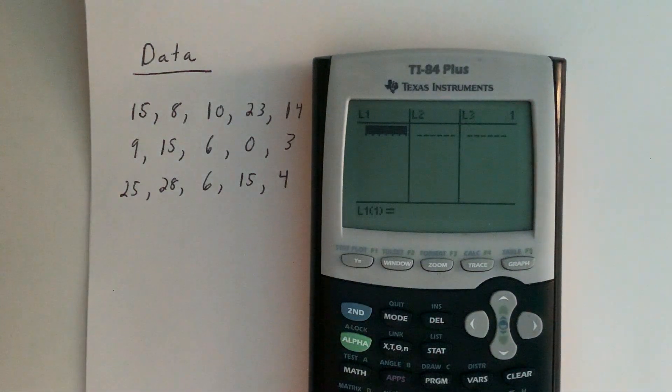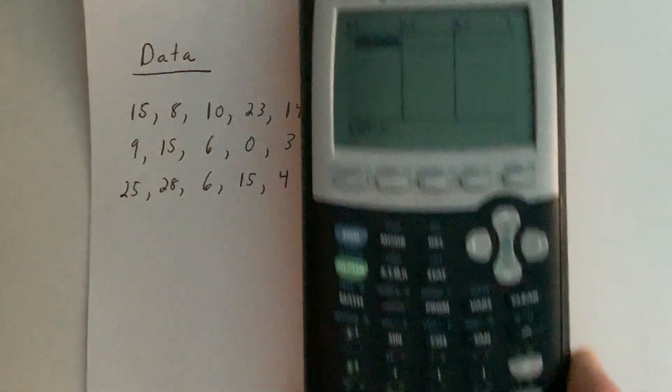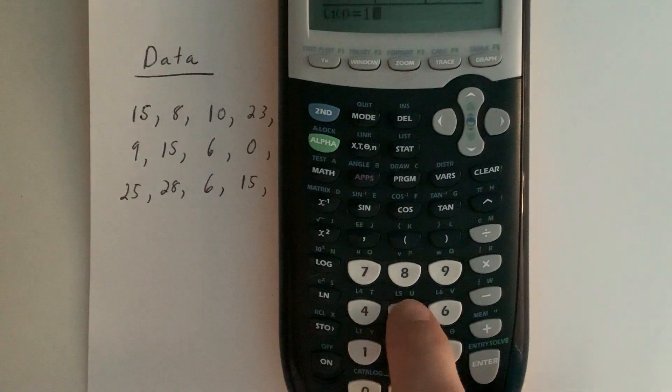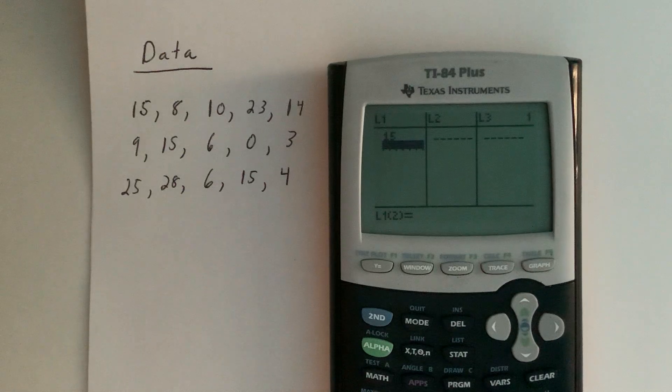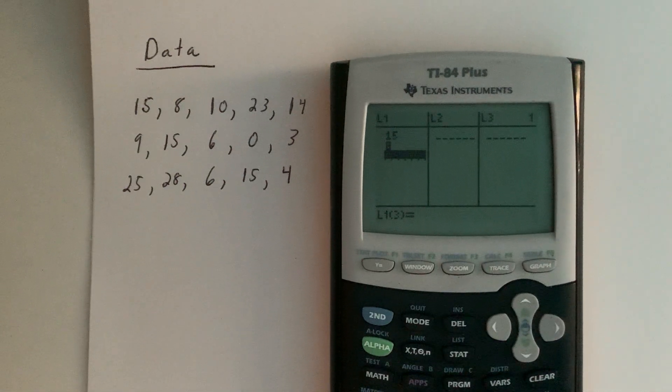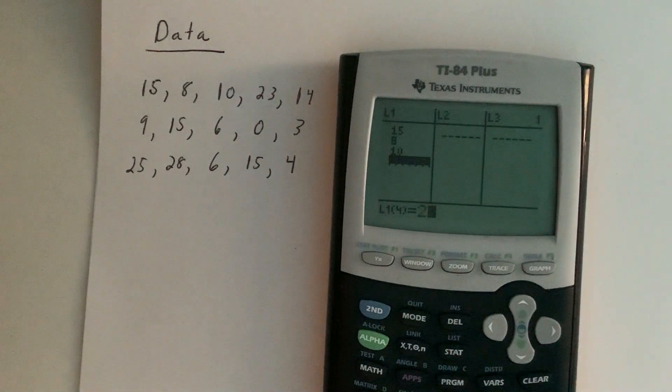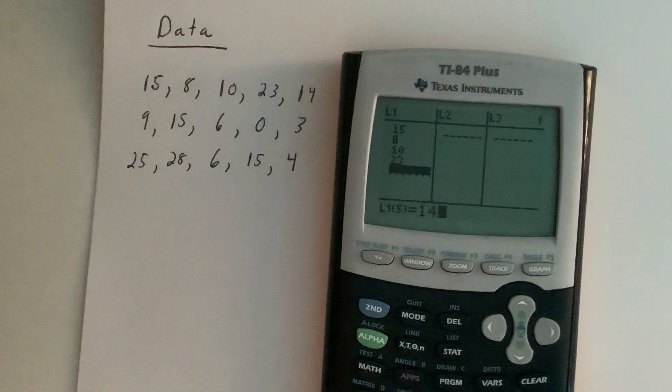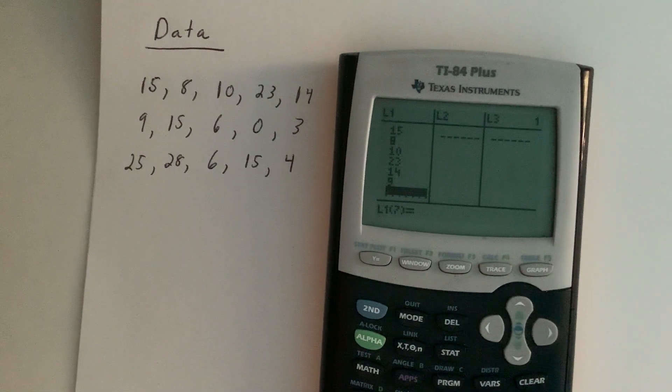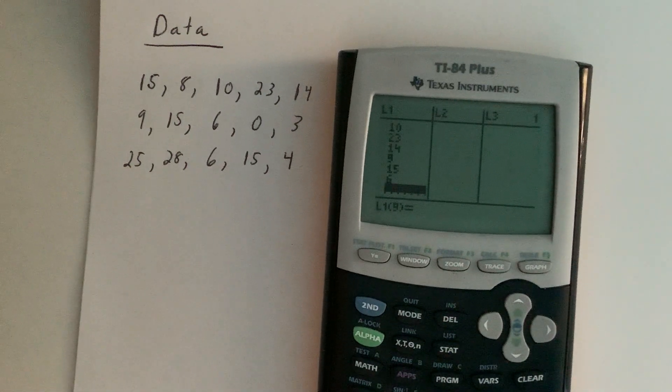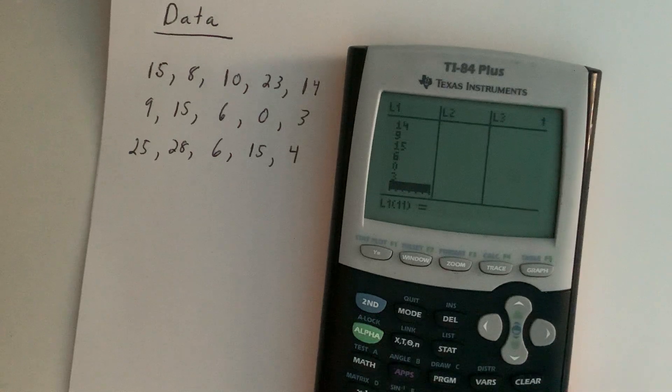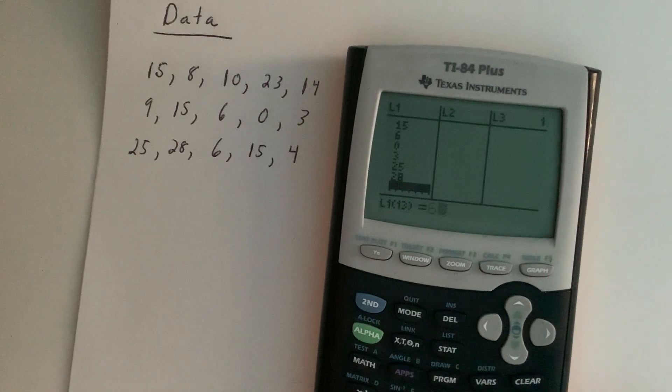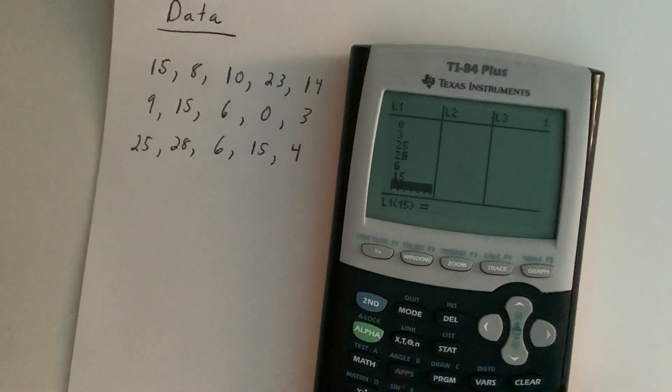For now, we'll go ahead and start adding our data. I'll take our first data point, which is 15, type that in, and hit enter. So 8 and enter, then 10 and enter, then 23 and enter, 14 and enter, then 9 and enter, 15, and enter, 6, 0, 3, 25, 28, 6, 15, and 4.